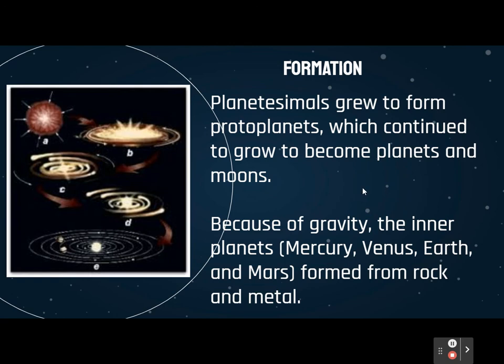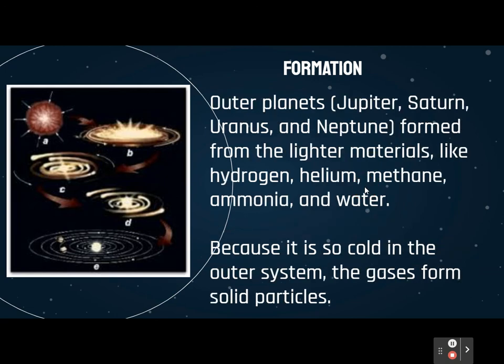Because of gravity, the inner planets — Mercury, Venus, Earth, and Mars — are made of rock and metal. They do have some gases, but they are not gas giants. The outer planets — Jupiter, Saturn, Uranus, and Neptune — form from the lighter materials: the gases hydrogen, helium, methane, ammonia, and water. But the weird part is that because it's so cold out there, what we consider to be gases can actually be solids or liquids on these planets.